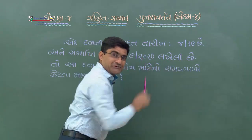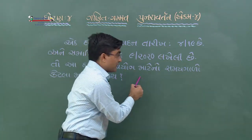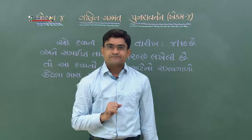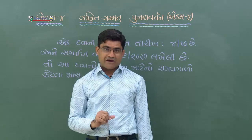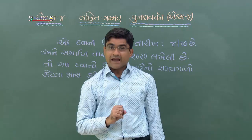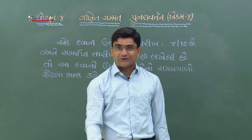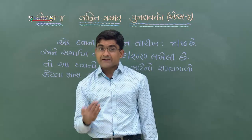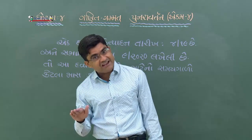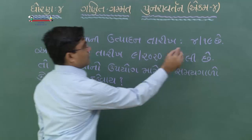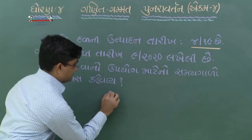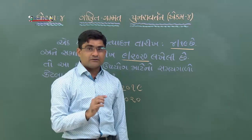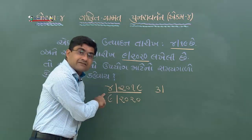ઉત્પાદન તારીખ અને સમાપ્તિ તારીખ - 2020 લખેલ છે. દવાનો ઉપયોગ માટેનો સમયગાળો કેટલા માસ? ઉત્પાદન તારીખ 2019 છે, અને સમાપ્તિ તારીખ 2020. ચાલો ગણતરી કરીએ - 4/2019 થી 3/2020 સૂધી.